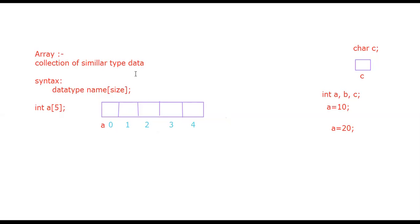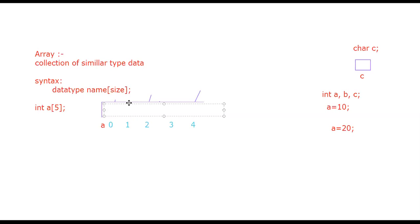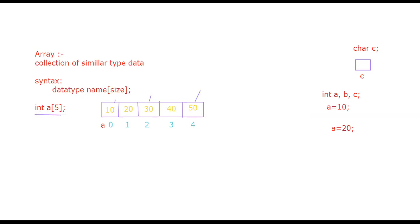You can easily access the first block, second one, or fourth one as per your choice, because indices are available for all these blocks. The basic condition for arrays is that you can store only similar type of data. Here, since we declared the array as integer type, we are going to store only integer type of data.